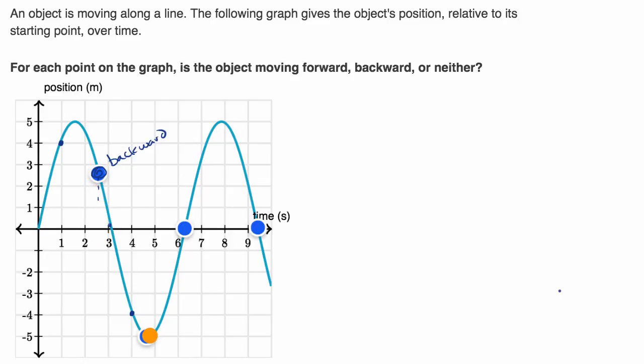And if we look at this point right over here, it looks like we were going backwards this entire time while our curve is downward sloping. But at this point right over here, when we are about five meters behind our starting point, we start going forward again.